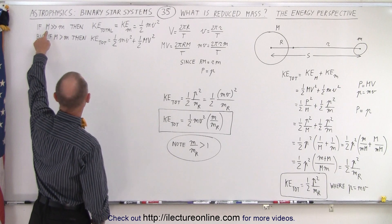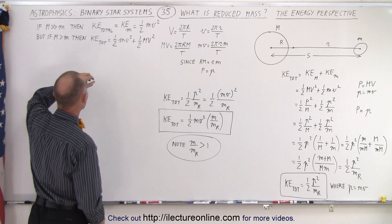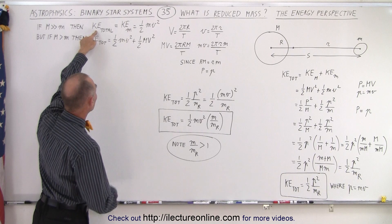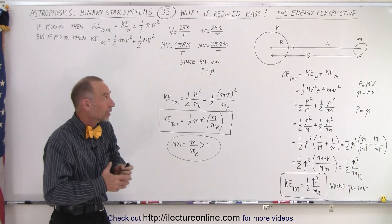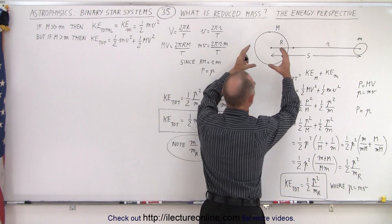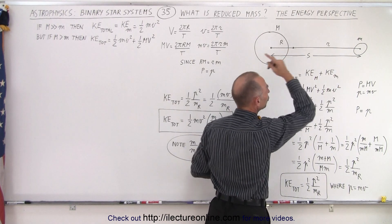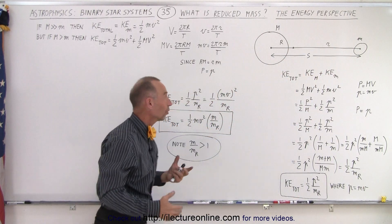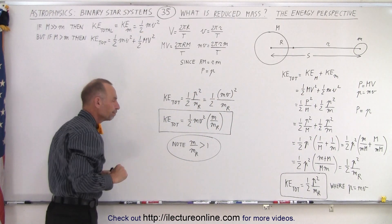If the large mass is much greater than the small mass, then the total kinetic energy of the system is simply the kinetic energy of the small mass, because essentially the large mass does not move. All of the kinetic energy motion is due to the small mass, so we can calculate it to be ½mv².